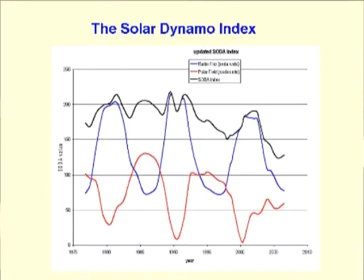This is the basis of Ken Shatton's prediction. The red line is the strength of the polar magnetic fields on the Sun and the blue line is the strength of the toroidal magnetic fields. During a sunspot cycle, polar magnetic field strength is converted to toroidal magnetic field strength and back again. Sunspots form from the toroidal magnetic fields breaking through to the Sun's surface.